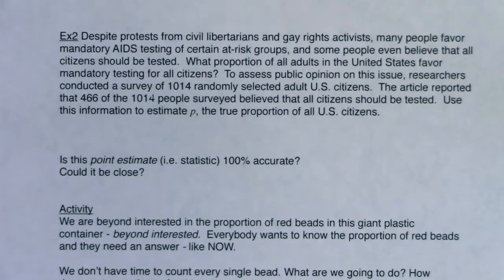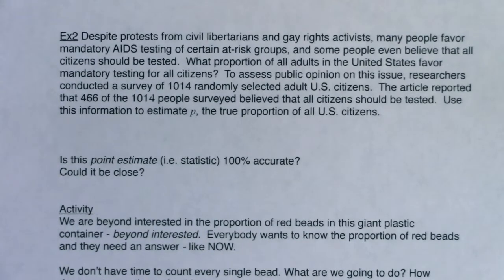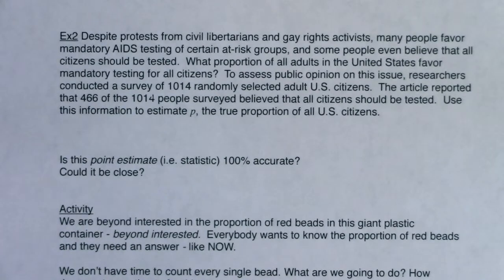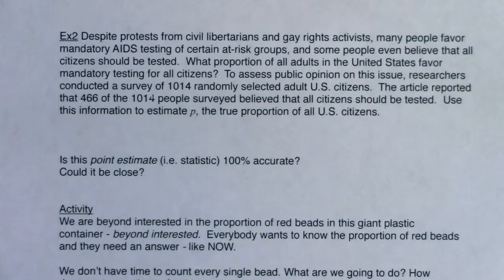Hey Math 43, let's take a look at example two. One of the things I want us to listen for as I read this is: which land are we in? Are we in mean land or proportion land? Towards the end of chapter seven we started to ask those questions. Another way of asking that would be: what was my variable? Did I have a numerical variable or did I have a categorical variable?